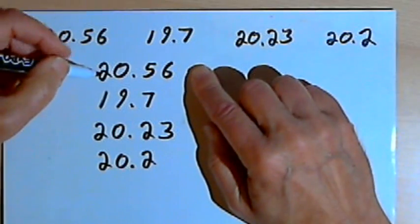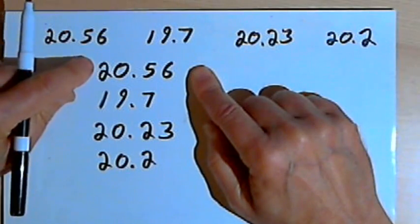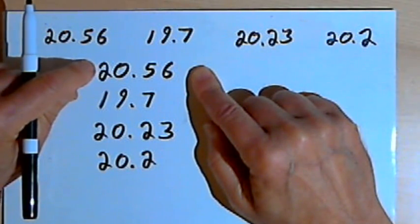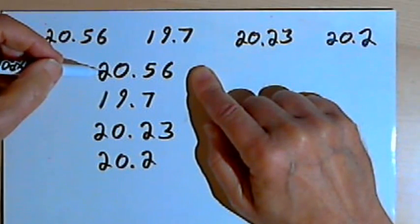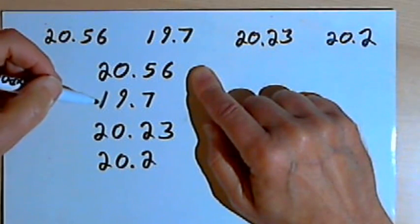Now to find out which is the smallest of these numbers, I'll go over to the left of the numbers, the left end, which is going to be the tens column. I'll compare all the digits in the tens column. If I find a digit that's smaller than the others, then that's going to tell me which is the smallest number.